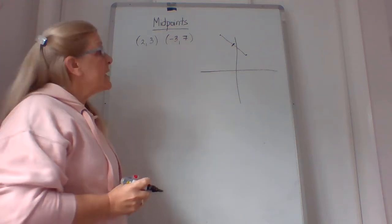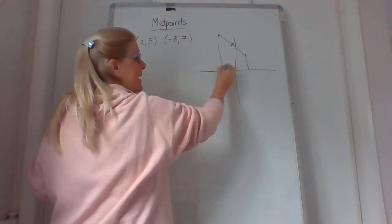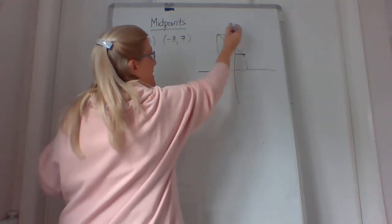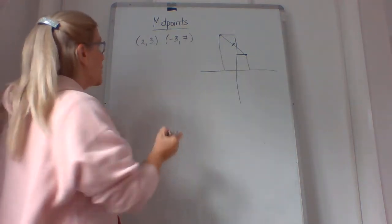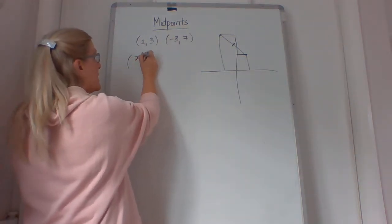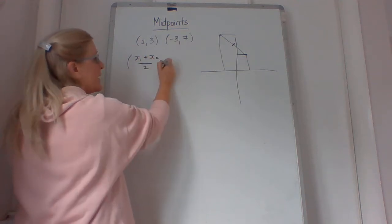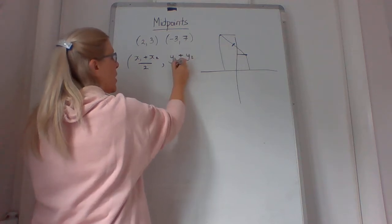Now what we do to do this is that we add together this height and this height and average them, and we add together this and this and average them to actually find out what it is. So the formula for it is (x1 + x2)/2, and (y1 + y2)/2.